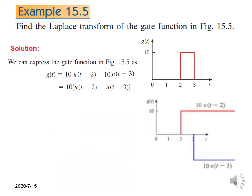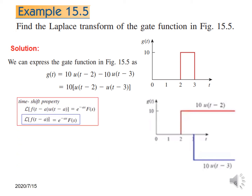Mathematically, we can write that this gate function g(t) is 10u(t minus 2) minus 10u(t minus 3). If we take 10 common, we get these two terms. Now let us see how to find the Laplace Transform. We will be using the time shift property.